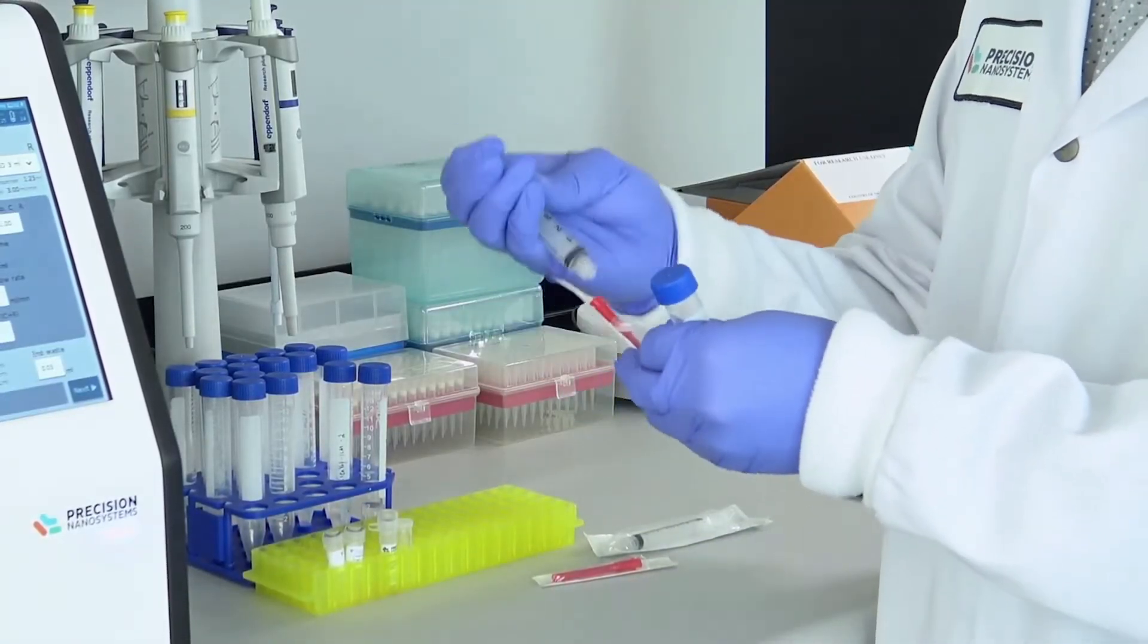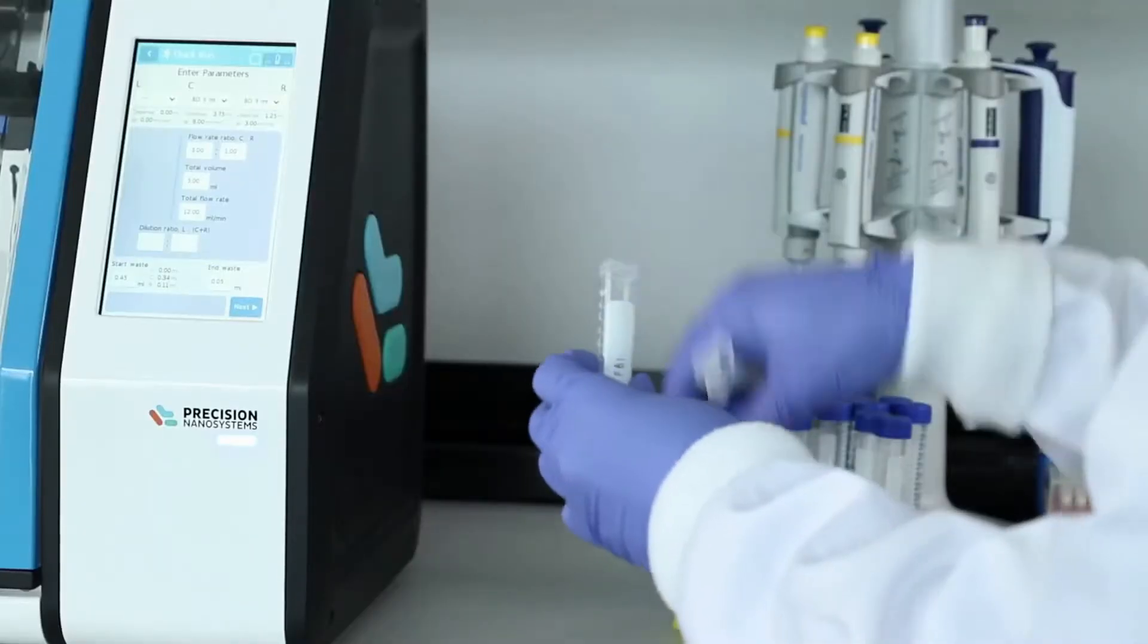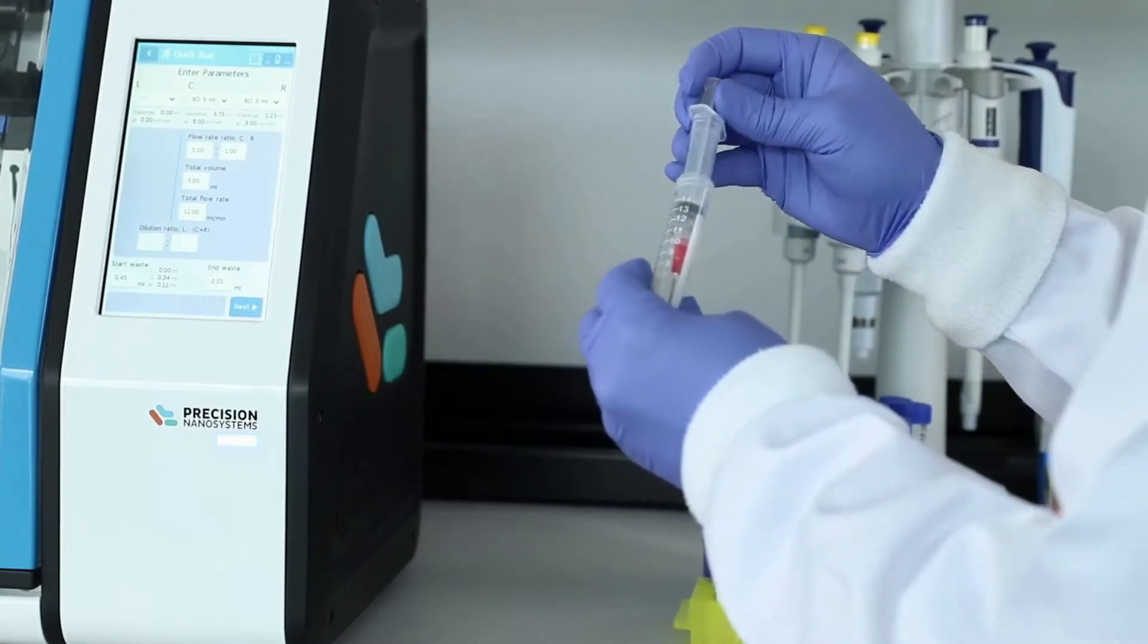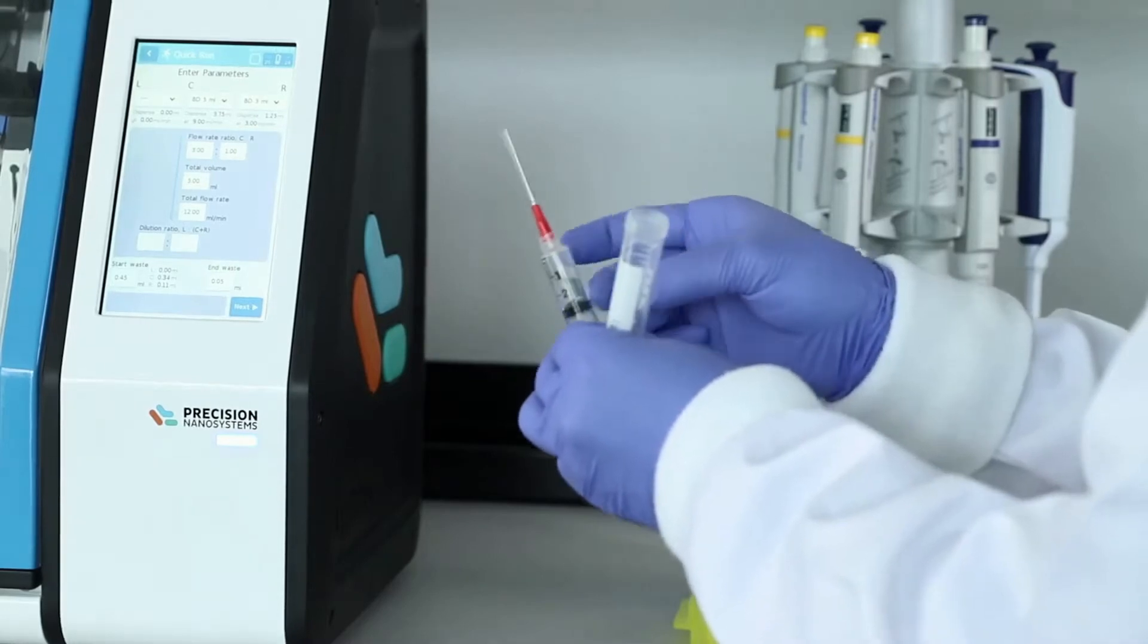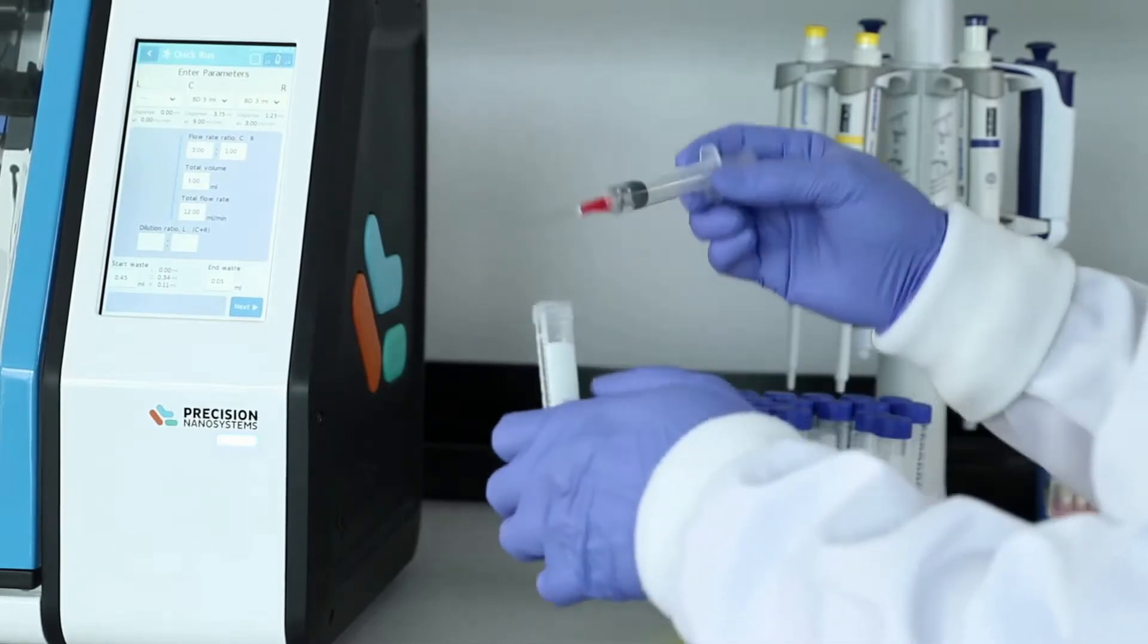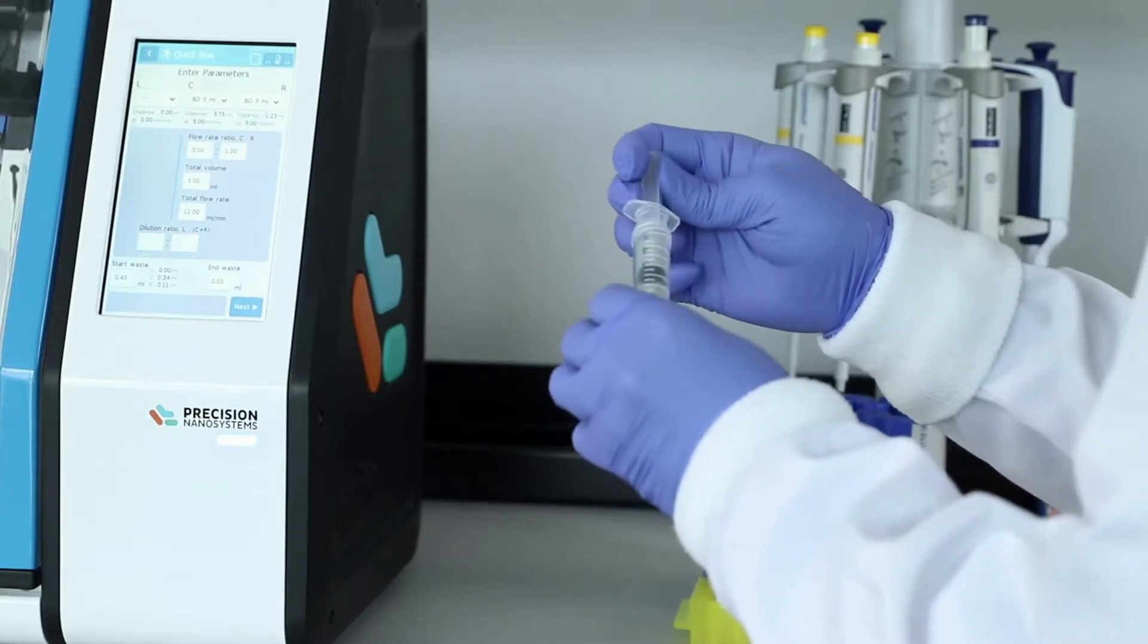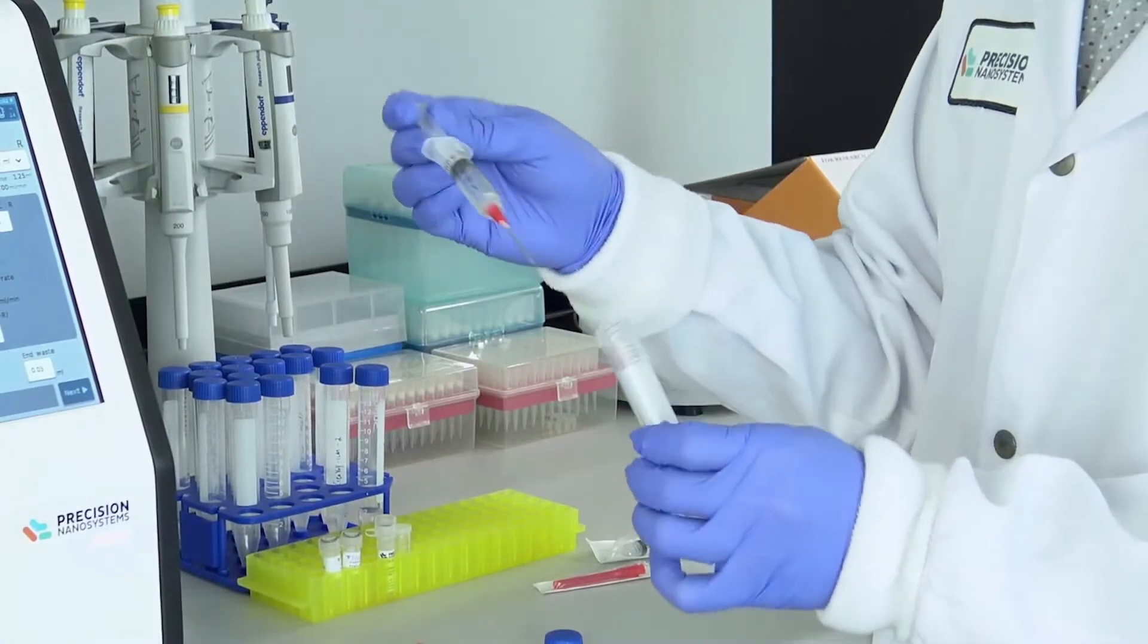It ensures the conditions are highly reproducible run after run, regardless of who's using it. Fluid input is handled through syringes which attach by luer lock directly to the Ignite cartridge. Here, RNA and an acidic buffer is loaded in a syringe, then our GenVoy ionizable lipid mix dissolved in ethanol is loaded in another.